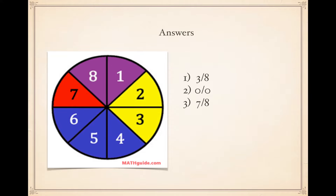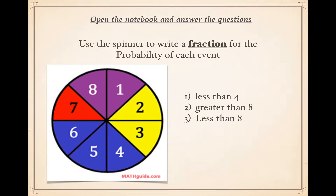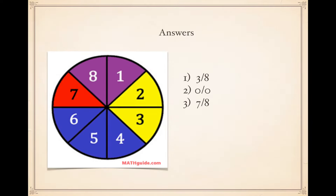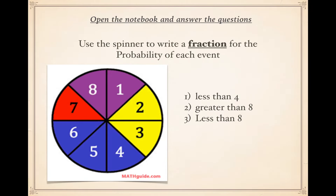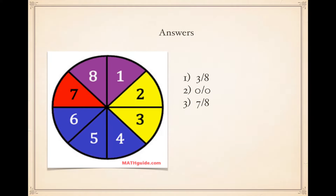The answers: less than four — three over eight, because there are three blue sections. Greater than eight — there are no numbers greater than eight, so it's zero over zero — impossible. Less than eight — counting one through seven gives us seven sections — so seven over eight, which is quite likely.